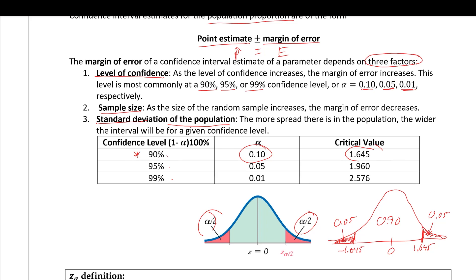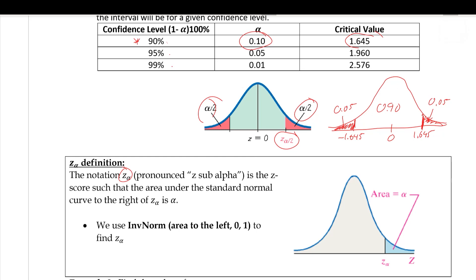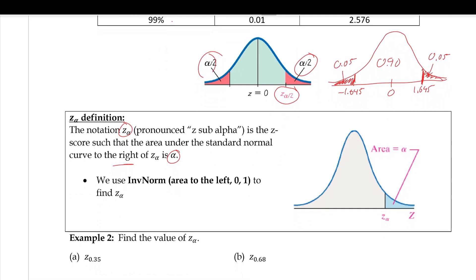The notation Z sub alpha is a Z-score such that the area under the standard normal to the right is alpha. To find these values, use inverse normal just like in previous chapters. The area to the right is alpha, meaning the area to the left is 1 minus alpha.